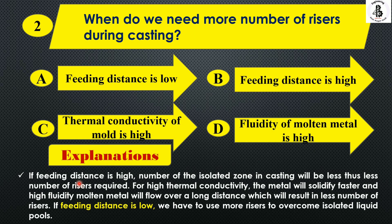When the feeding distance is higher, the number of isolated pools drawn into the castings will be less, so fewer risers are required. For high thermal conductivity, the metal will solidify faster, and at high fluidity, the molten metal will flow over a long distance, which also results in fewer risers.